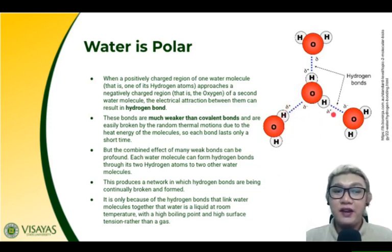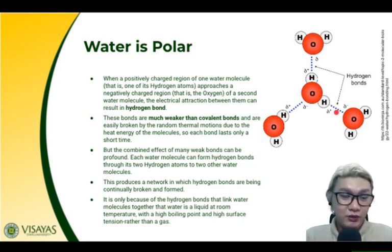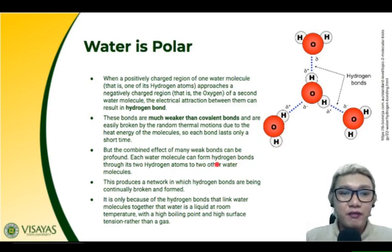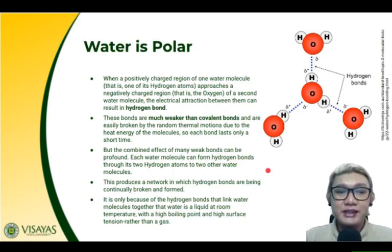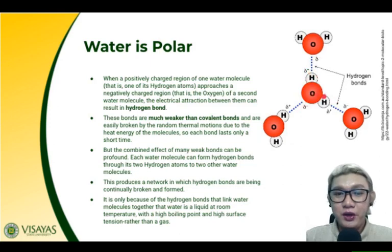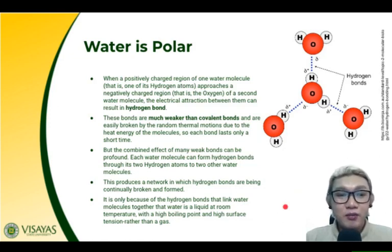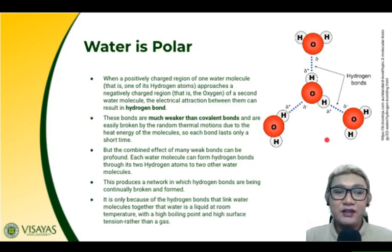Hydrogen bonds are weaker than covalent bonds. These are weak bonds, easily broken by the random thermal motions due to heat energy of the molecules, so each bond lasts only a short time. But the combined effects of many weak bonds can be profound. Each water molecule can form hydrogen bonds with two other water molecules, producing a network in which hydrogen bonds are continually broken and formed. It is because of these hydrogen bonds linking water molecules together that water is liquid at room temperature, with a high boiling point and high surface tension, rather than a gas.